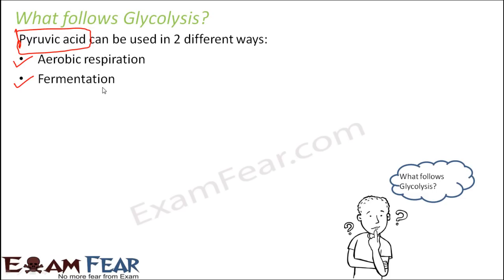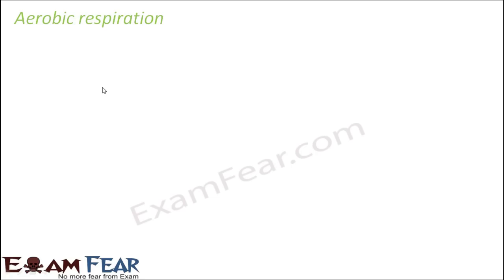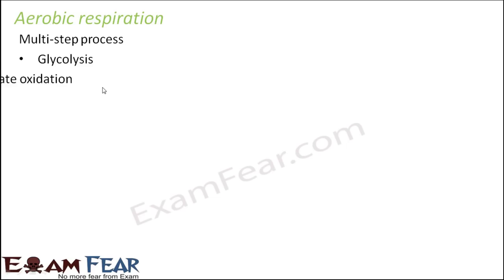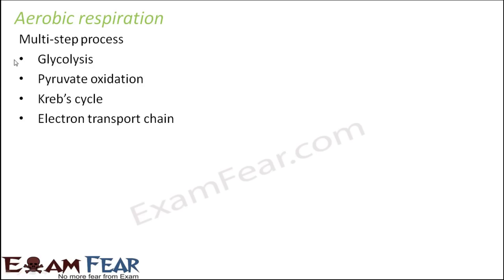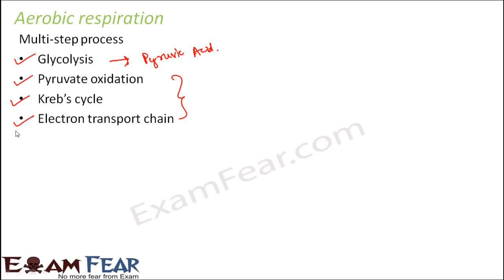Now we will talk about the remaining steps of aerobic respiration — what happens in presence of oxygen. Since glycolysis is done, the next step for aerobic respiration will be pyruvate oxidation. Aerobic respiration is a multi-step process with four steps: glycolysis, pyruvate oxidation, Krebs cycle, and electron transport chain. We have already discussed glycolysis, so now we will discuss the remaining three steps: pyruvate oxidation, Krebs cycle, and electron transport chain.